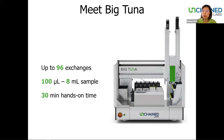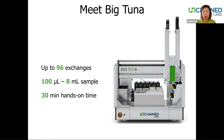Originally developed to help break through the bottlenecks of protein buffer exchange, we also found that Big Tuna is a great automated buffer exchange system for AAV particles and other virus-like particles as well. It can exchange and concentrate up to 95 samples all at once, with flexible volume input from as little as 100 microliters up to 1 mL per sample. Big Tuna is designed to be so simple to use — you can finish designing your experiment and load your deck in just 30 minutes and let Big Tuna take care of the rest.